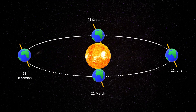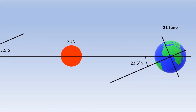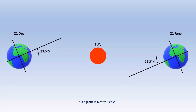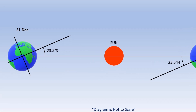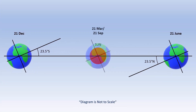The earth's tilt is constant throughout time. This diagram shows four of the most important positions of the earth in relation to the sun within one year. On the 21st of June, the center of the sun is aligned with latitude 23.5 degrees north, and on the 21st of December, the center of the sun is aligned with latitude 23.5 degrees south. On the 21st of March and 21st of September, the center of the sun is aligned with the equator. These changes cause unequal heating on the surface of the earth, which creates seasonal changes.